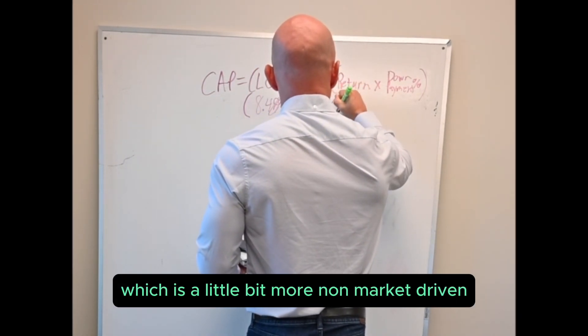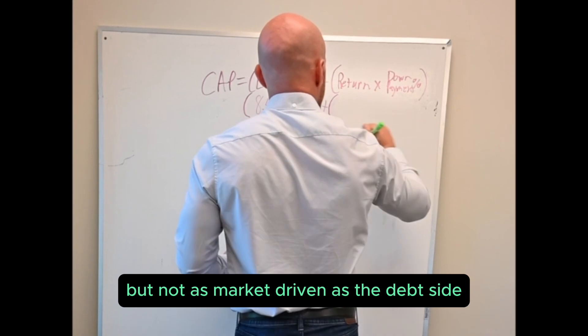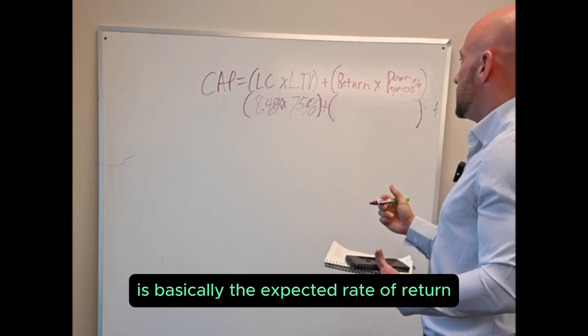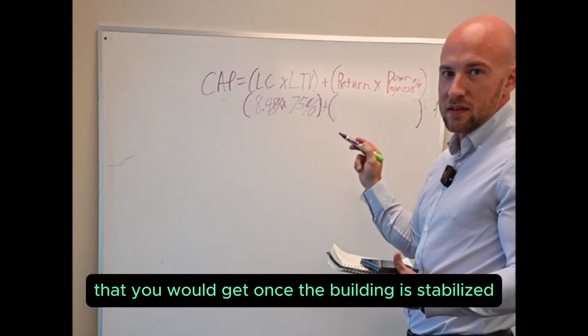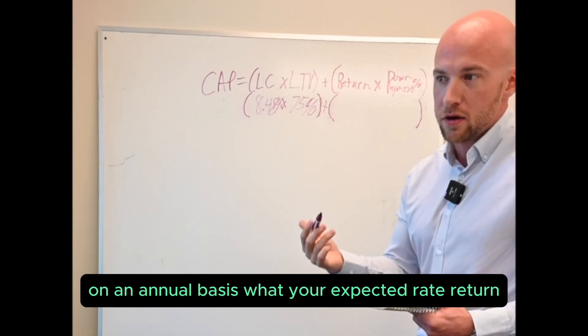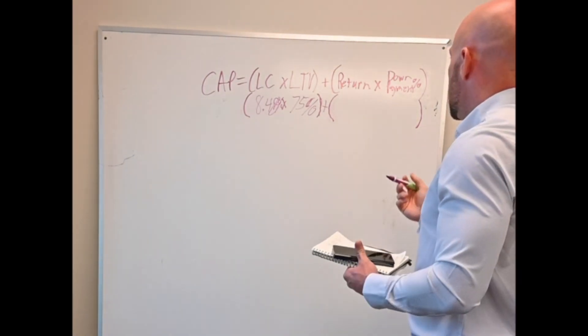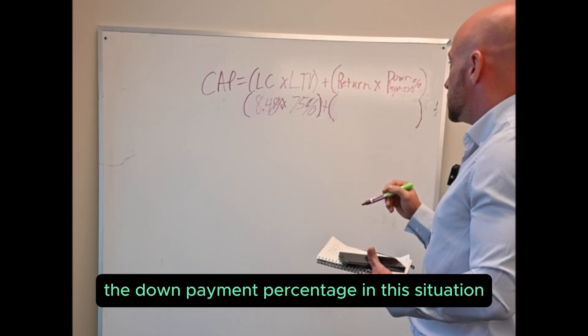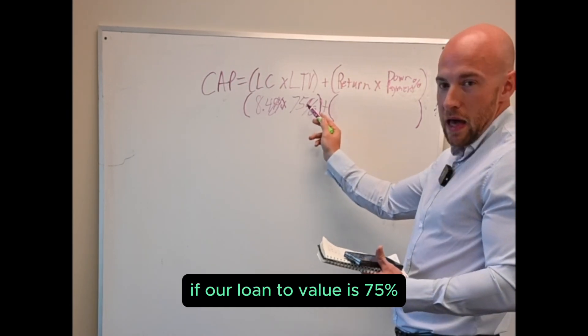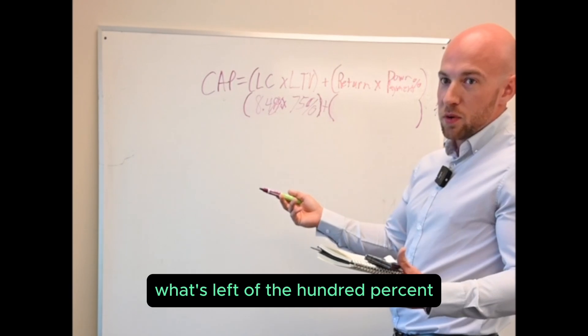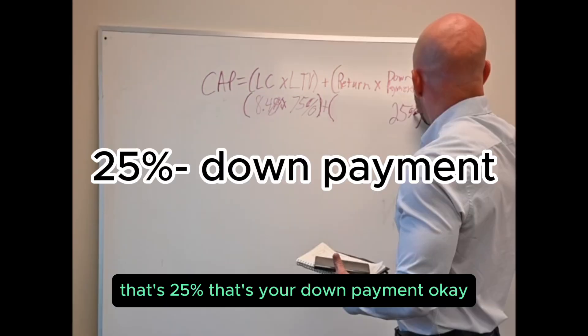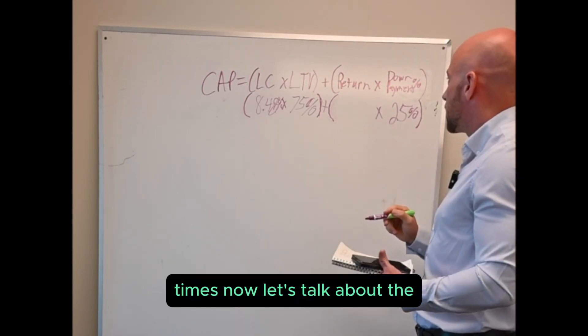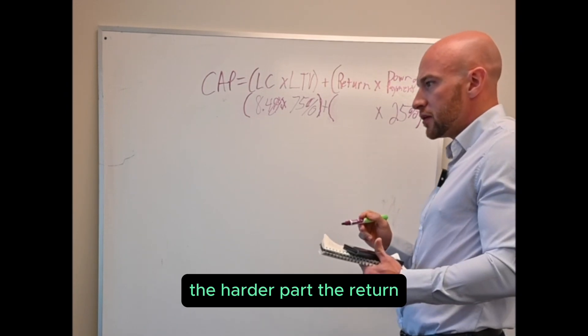Which is a little bit more non-market driven, it is market driven but not as market driven as the debt side, is basically the expected rate of return that you would get once the building is stabilized on an annual basis. What's your expected rate of return? We also call that cash on cash return times your down payment percentage. Let's start with the easy part of the equation, the down payment percentage. In this situation if our loan to value is 75 percent, what's left of the 100 percent? That's 25 percent, that's your down payment. That's the easy part.